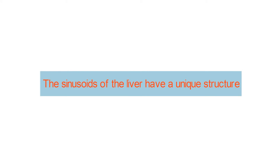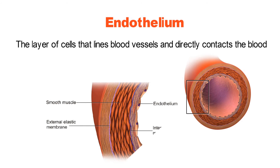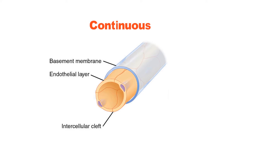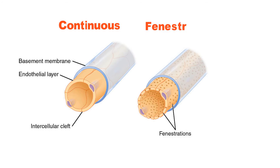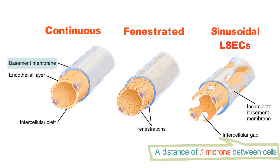Number three: the sinusoids of the liver have a unique structure. The layer of cells that lines blood vessels and directly contacts the blood, known as endothelium, is different in the sinusoids of the liver than anywhere else in the human body. Endothelial cells on most capillaries are tightly bound together and only become fenestrated as part of an immune response, and are usually bound together by a basement membrane. Liver sinusoidal endothelial cells, or LSECs, are always fenestrated with gaps of 0.1 microns between cells, and LSECs also lack a basement membrane.